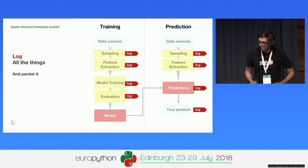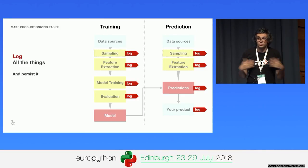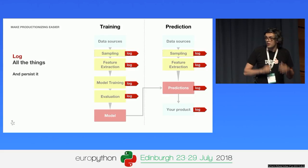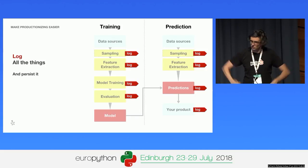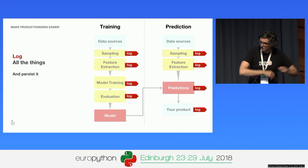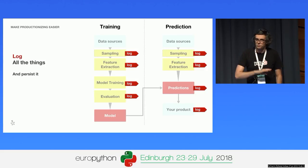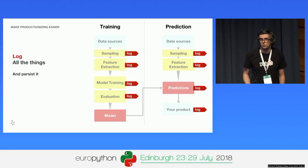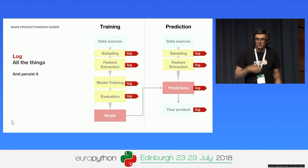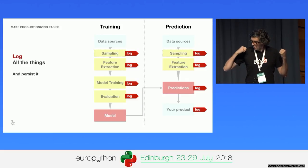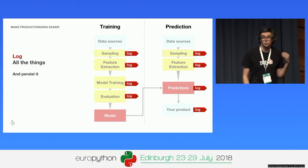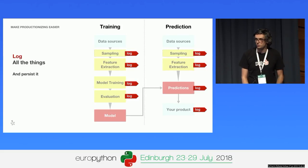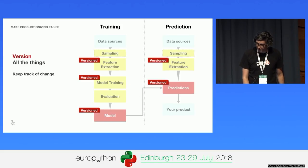Log all the things. You want to know what's happening with your pipeline — it's not running under your supervision. Get it to log everything: the sampling, how classes were selected. Feature extraction — log everything that happens, how many features were extracted, maybe some small statistics about the features. If you have a problem, you can just look at your logs without having to recalculate everything. Model training — log everything that happens. Evaluation — log feature importance, these kinds of things. And in your product, log when you're actually using your prediction, what usage is made of it. Every time you're doing something, you want logs. This is how you measure things.